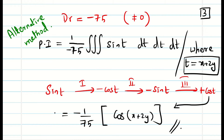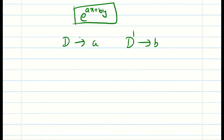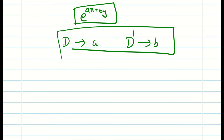In this alternative method we use d → a, d' → b just like in Type 1. This same procedure also works for e^(ax+by). If you follow this method you do not need to remember the individual substitutions for d², dd', and d'² separately — just replace d by a and d' by b directly.